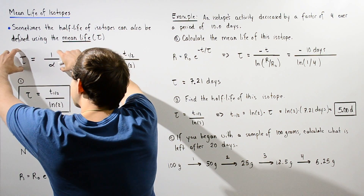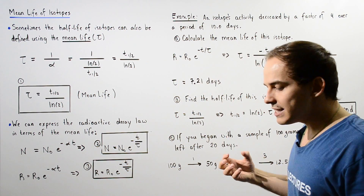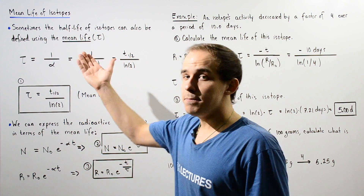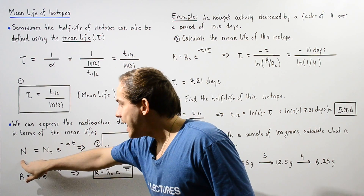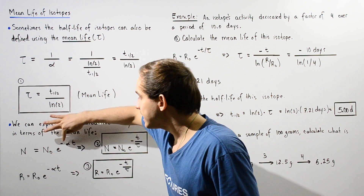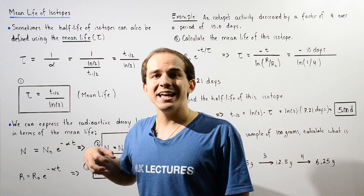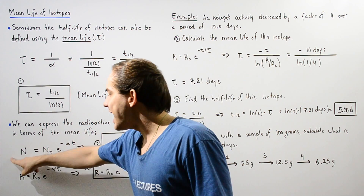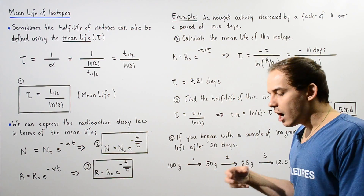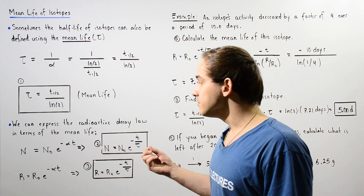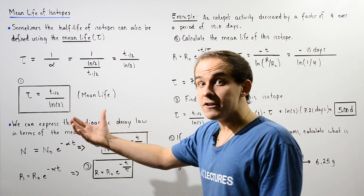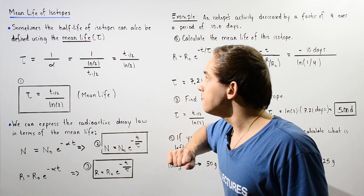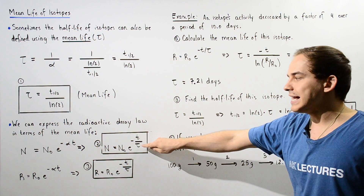Using this definition of mean life, we can replace the alpha term inside the two radioactive decay laws with tau. Recall that N equals N-not multiplied by e to the negative alpha times t, where N-not is the initial number of atoms at time t equals 0, and N is how many remaining unstable isotopes we have at some later time t. We can replace alpha with 1 divided by tau to get the updated equation.